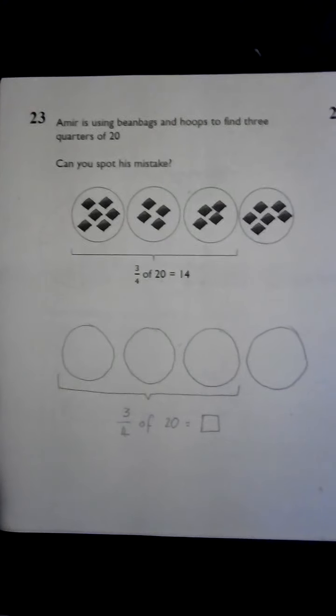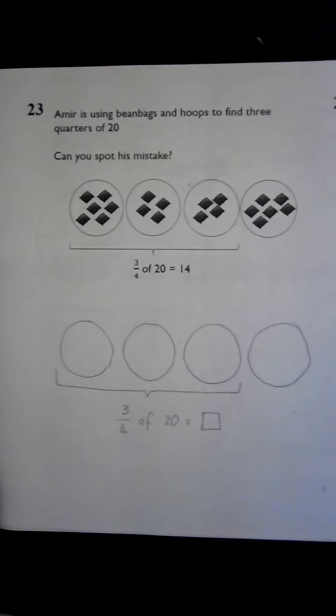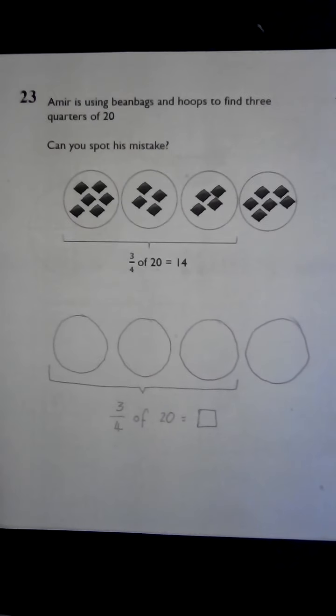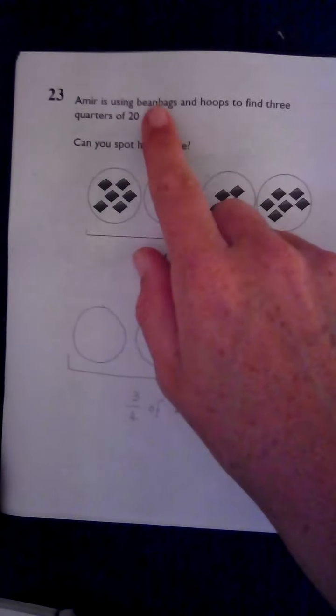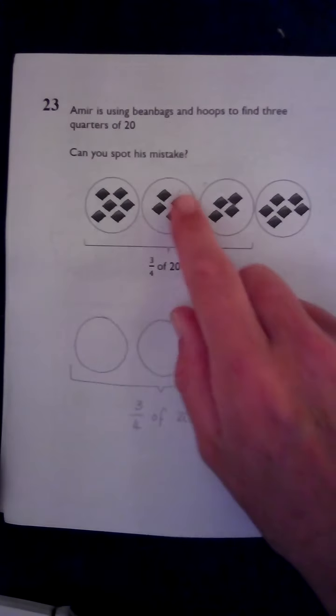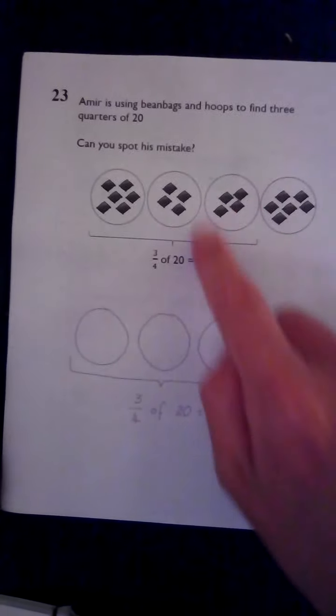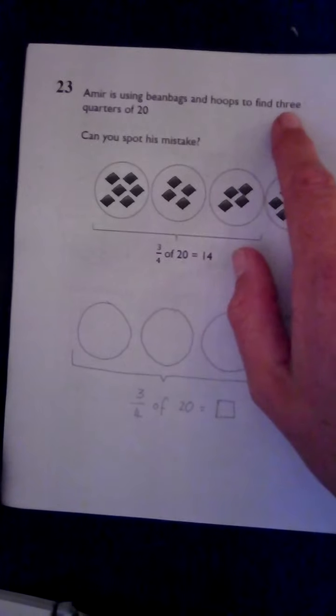We're going to complete the last four questions on fractions today and I'm going to show you how to set them up so it makes it a bit easier and explain the question. So Amir is using bean bags - these black things here are bean bags - and hoops - the circles are the hoops - to find three quarters of 20.